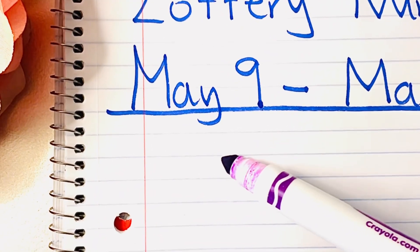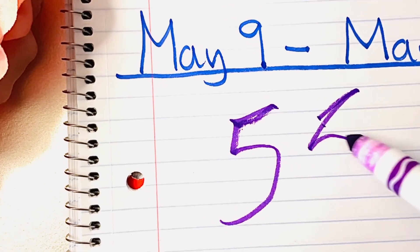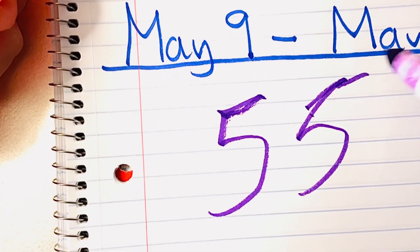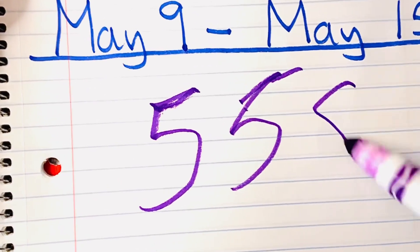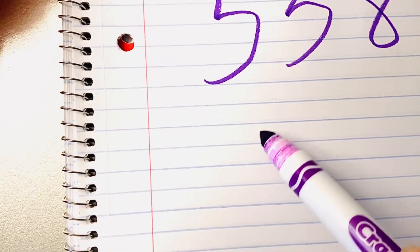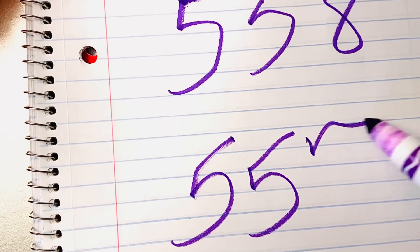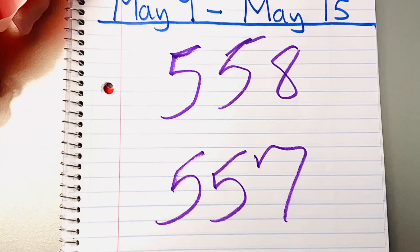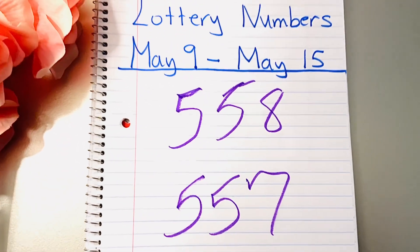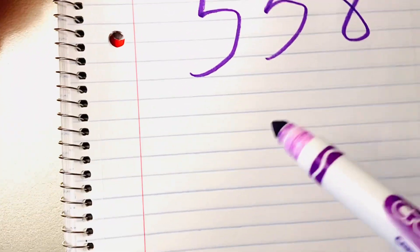558 is the first number I'm writing out, and then we have 557. Okay, again, we have a one-off situation. Numbers falling one off from the list are very common.